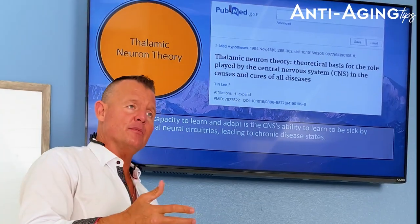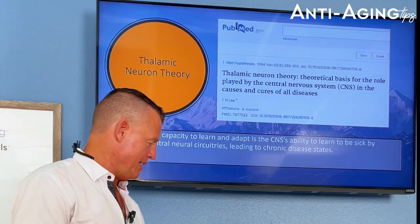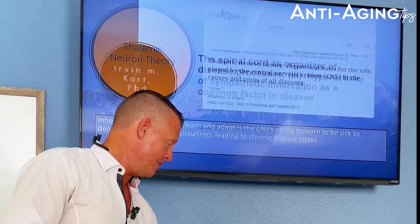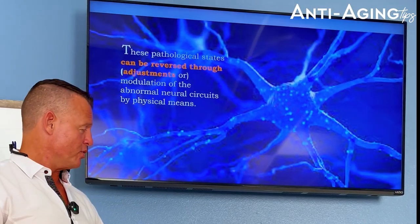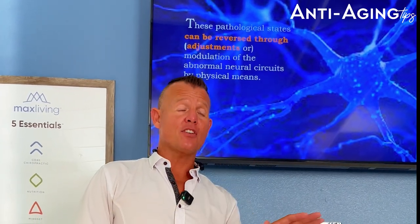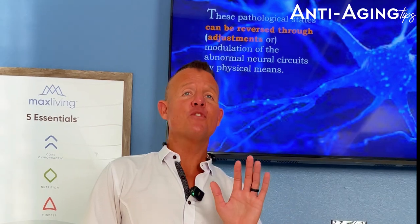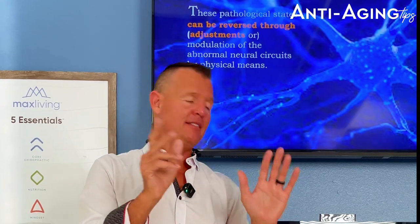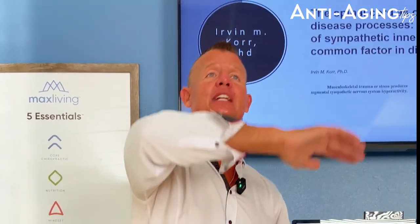If you look at the nervous system, it just becomes deranged, leading to chronic disease. But this guy won a Nobel Prize saying that you can reverse those pathological states through physical means. Somebody could do something to your central nervous system and eradicate the disease-causing state it's in by forcefully doing something that rewires you. This guy won a Nobel Prize for this and says the spinal cord is the organizer of disease processes. And your medical doctor is not doing anything for your spine.